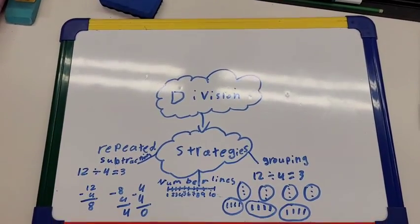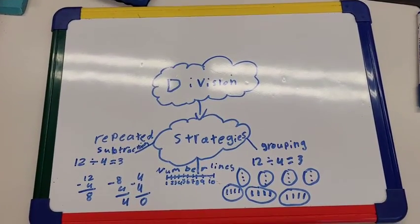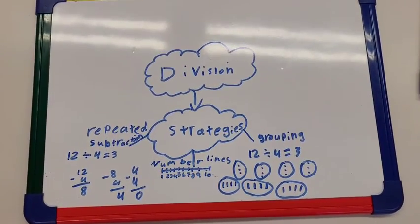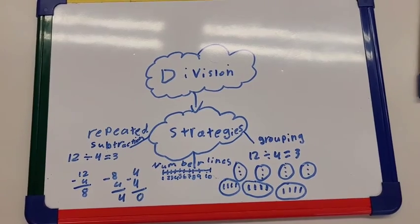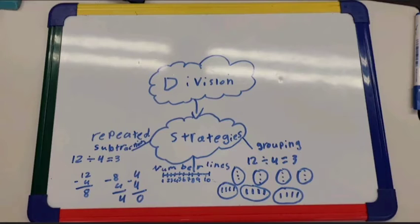As you can see here, I have used repeated subtraction, number line, and grouping. Here we are dividing 12 divided by 4 equals 3.